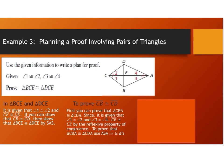We need to first prove that side CB is congruent to side CD. Since angle 1 is congruent to angle 2 and angle 3 is congruent to angle 4, and using CE congruent to itself by the reflexive property, we can prove that triangle CBA is congruent to triangle CDA using angle-side-angle, which implies congruent triangles.